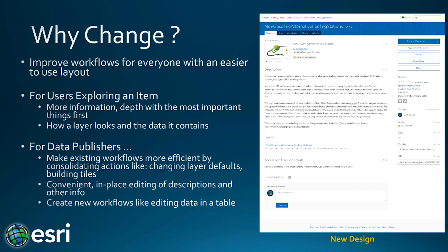For example, we'll highlight the most common actions in the top right of the page, using new button styles to make it easy to open a layer in the map viewer, create a presentation, or share the item. New button styles and typography will guide you to the workflows and content that matter most. The new tabbed layout gives us more room to add new features while keeping the look streamlined and easy to use. For data publishers, we've consolidated a lot of the actions like changing the layer defaults or editing the item's description right in place, and there are also new workflows like editing the data in the table.